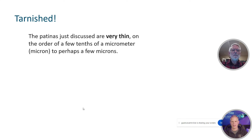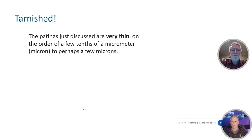This is an important point: all these patinas are really, really thin — microscopically thin, anywhere from a few tenths of a micrometer — what we call a micron — to perhaps a few microns. Now of course there are exceptions, and I'm sure just about everybody who's pulled apart a really nasty corroded connector has seen that stuff is just growing on it big time. But if we just think about exposure to the environment without that buildup of the really nasty stuff, the patinas tend to be pretty thin.